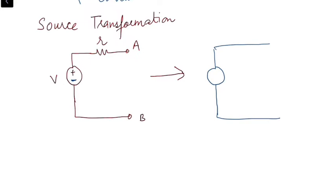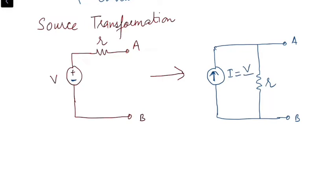The negative terminal will be replaced by the tail of the arrow, while the positive terminal will be replaced by the arrow head — this indicates the direction of current due to the source. The internal resistance will be connected in parallel with the current source, and we will have terminals A and B. The amount of current supplied by the source, I, will be equal to V divided by R. If it is more convenient to solve the problem with a current source, we can apply this rule.